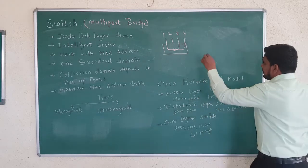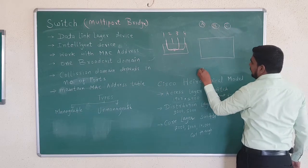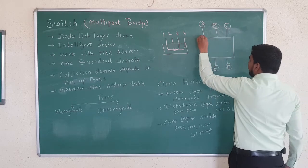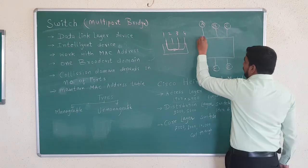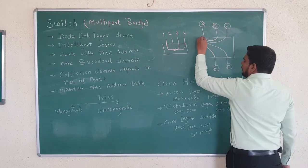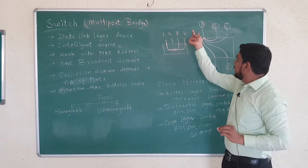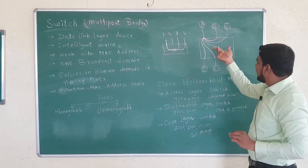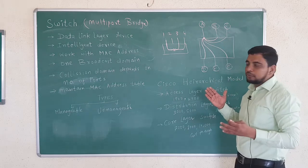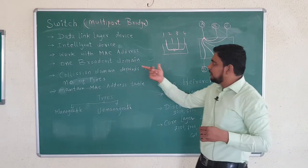In a switch, suppose devices A, B, C, D, E, F are connected. When A wants to communicate with B and C, for all devices a dedicated path is available internally. So collision will reduce because multiple paths are maintained, and the probability of collision will reduce in the switch. That is why it is called an intelligent device.